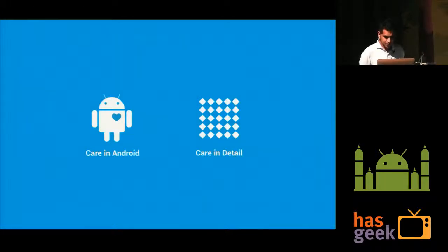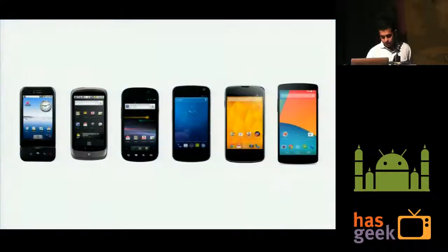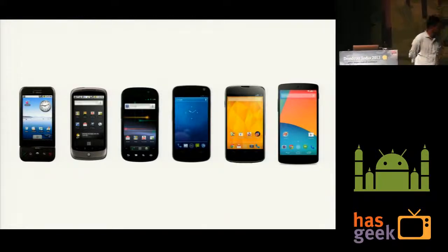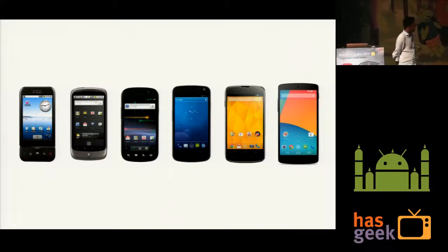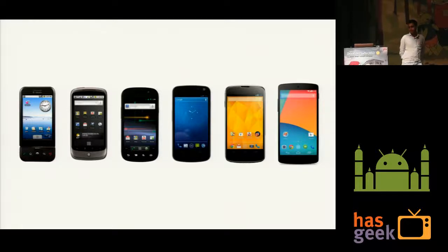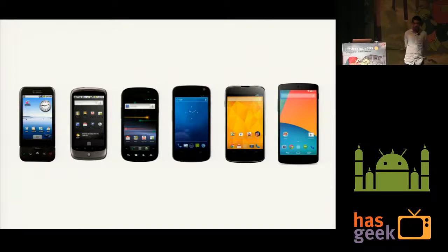Today I'm going to talk about two really important aspects when it comes to Android: how do you care when you're designing for Android, and how do you care for details? Android started off really young — everyone knows it from the G1 days to the Nexus 5 today. How I see this evolution is it's just change: Android is about change. Every year new things come out not only in the UI but also in terms of technology and platform. This constant need to change is a mindset worth zooming out and thinking about.